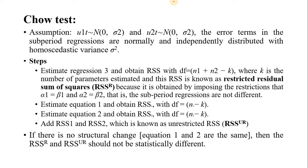The Chow test checks whether there is structural change. Its assumption is that u₁t and u₂t — the error terms of the two sub-period regressions — are normally and independently distributed with homoscedastic variance. That means u₁t and u₂t should both be normally distributed, independent of each other, and have equal variance. This is the assumption made by Chow.